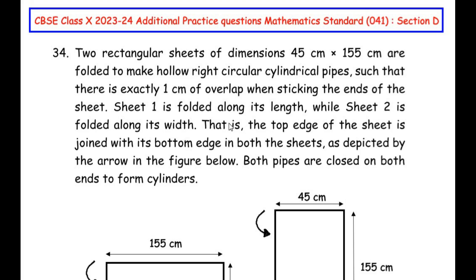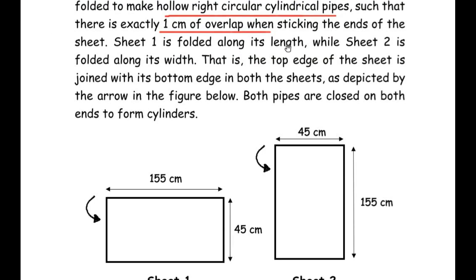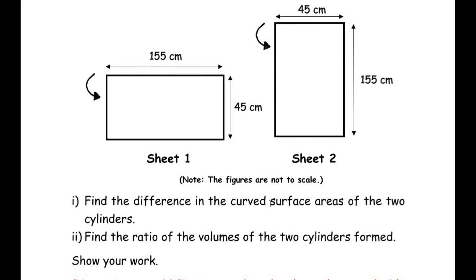This question belongs to the surface area and volumes chapter. Two rectangular sheets of dimensions 45cm × 155cm are folded to make hollow right circular cylindrical pipes such that there is exactly 1cm overlap when sticking the ends of the sheet. Sheet 1 is folded along its length while sheet 2 is folded along its width — the top edge is joined with the bottom edge in both sheets as depicted by the arrow in the figure. Both pipes are closed on both ends to form cylinders. Find the difference in curved surface areas of the two cylinders, and find the ratio of volumes of the two cylinders formed. Let us try to understand the question first.